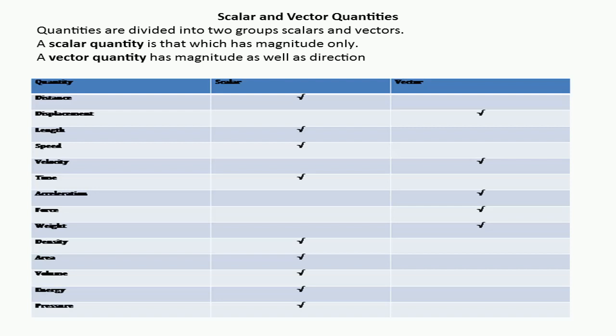The next quantity is displacement. Displacement is a vector quantity; to represent displacement we need direction. The third one is length. Length is a scalar quantity. Next is speed. Speed is a scalar quantity — we can read speed directly from the speedometer of a car, motorcycle, or any electronic instrument.